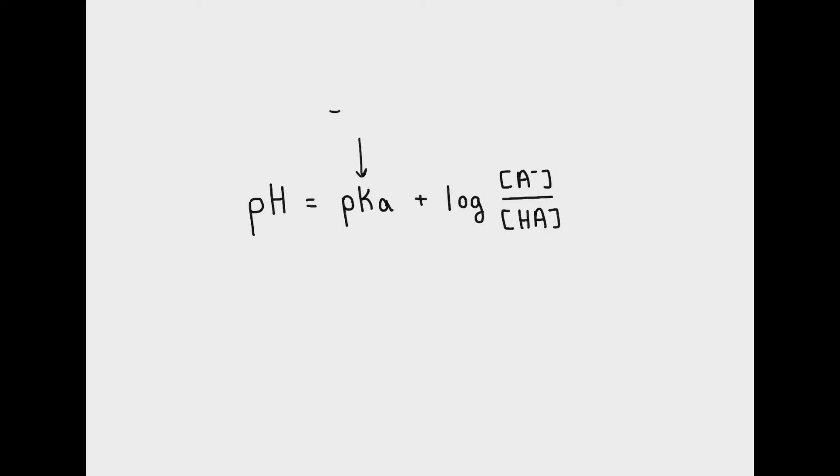pKa is the negative log of the Ka value of the weak acid HA. The fraction A minus over HA represents the ratio of conjugate acid-base pair.